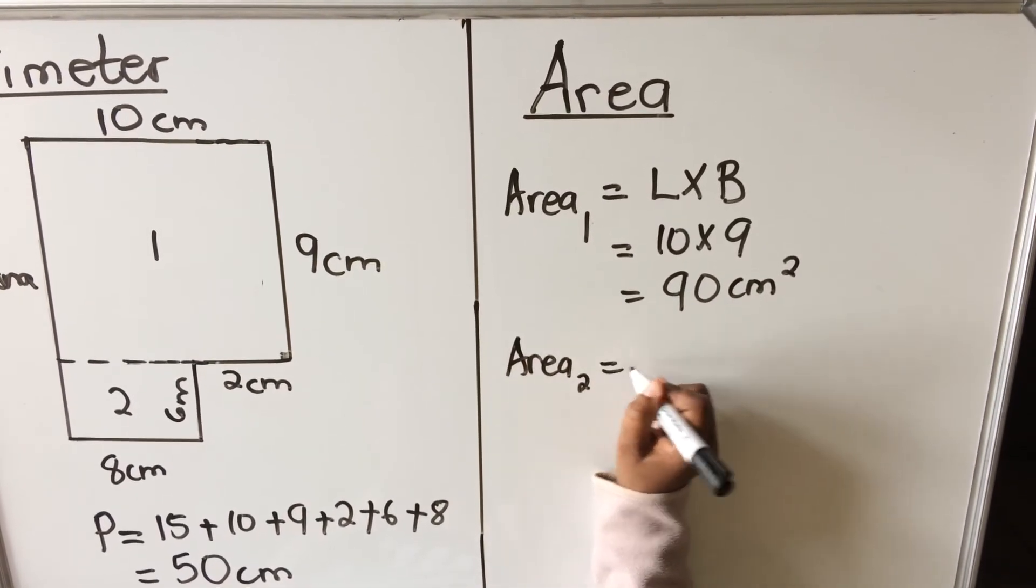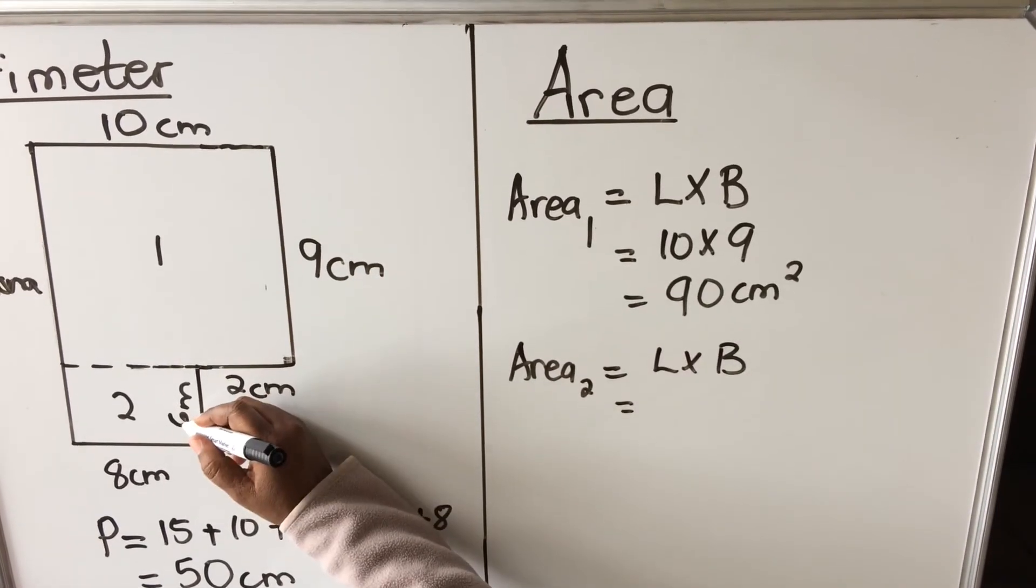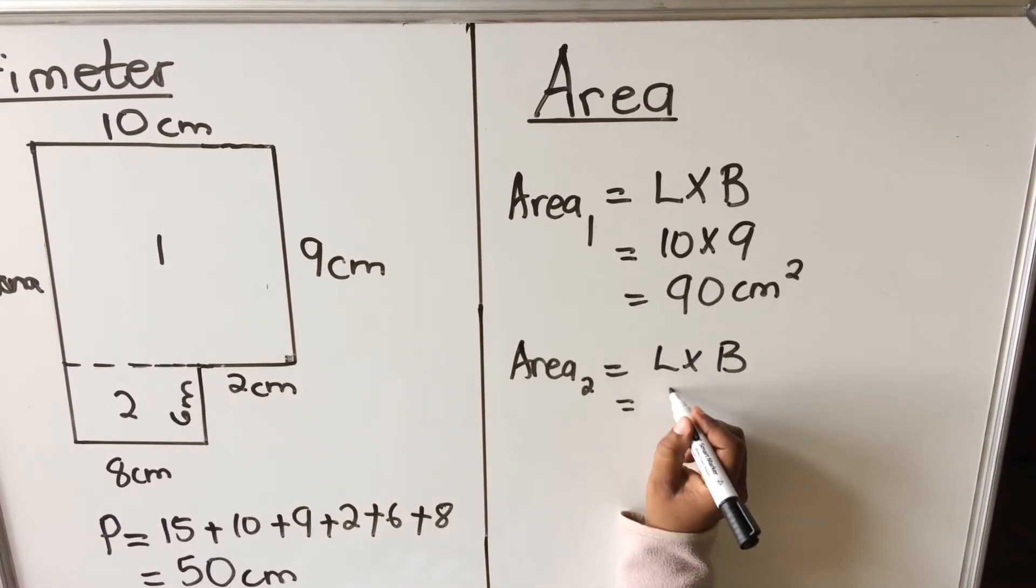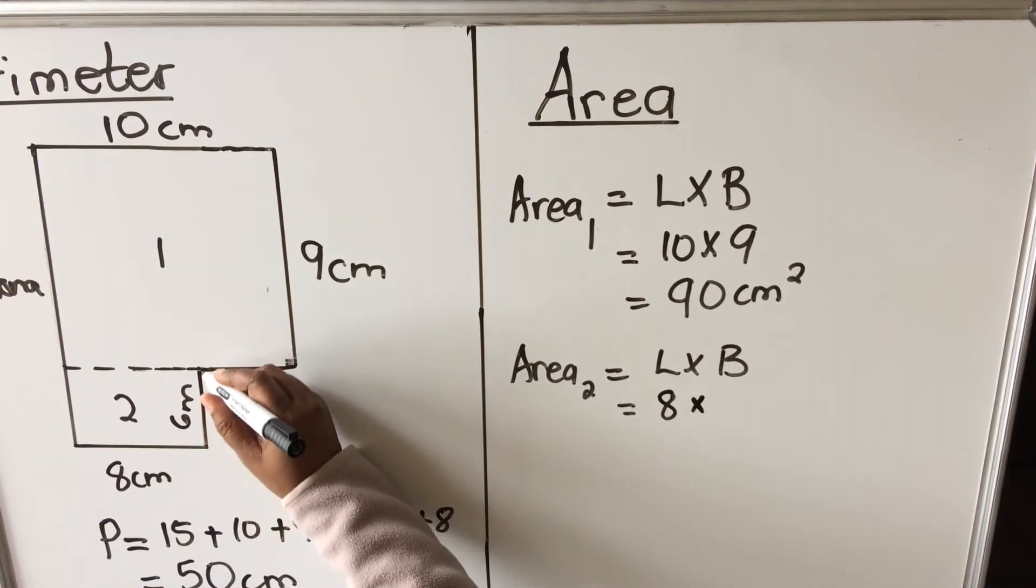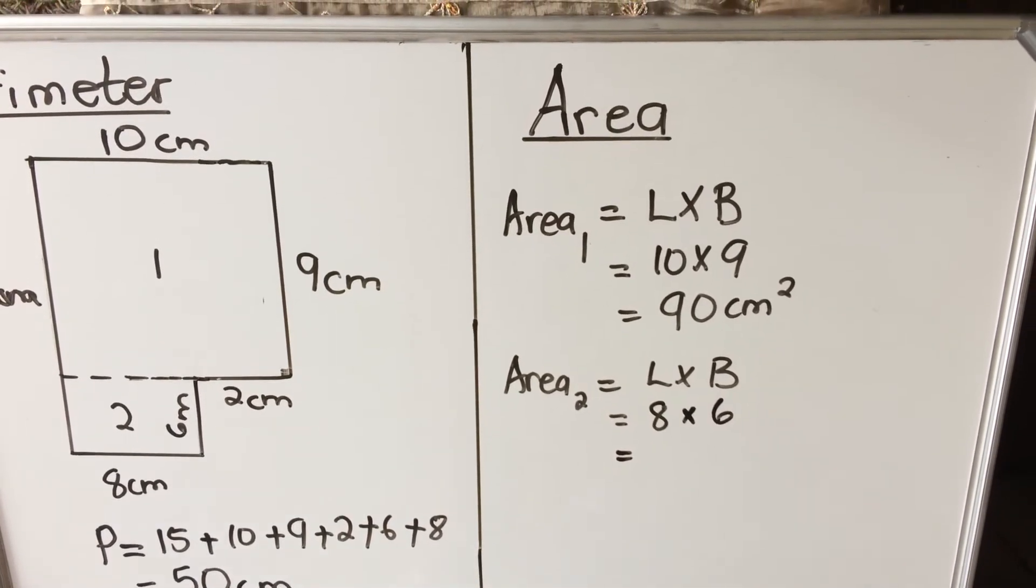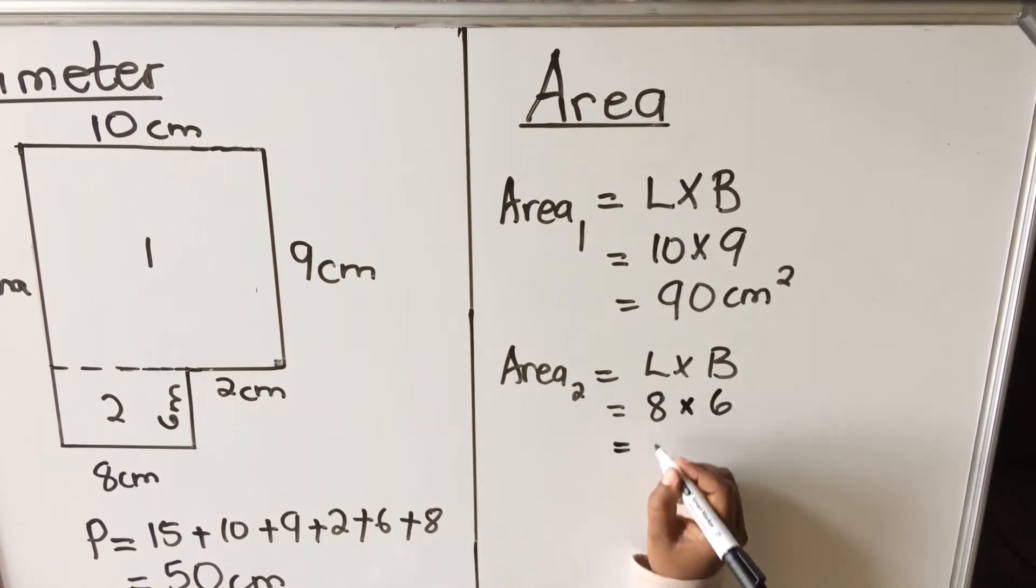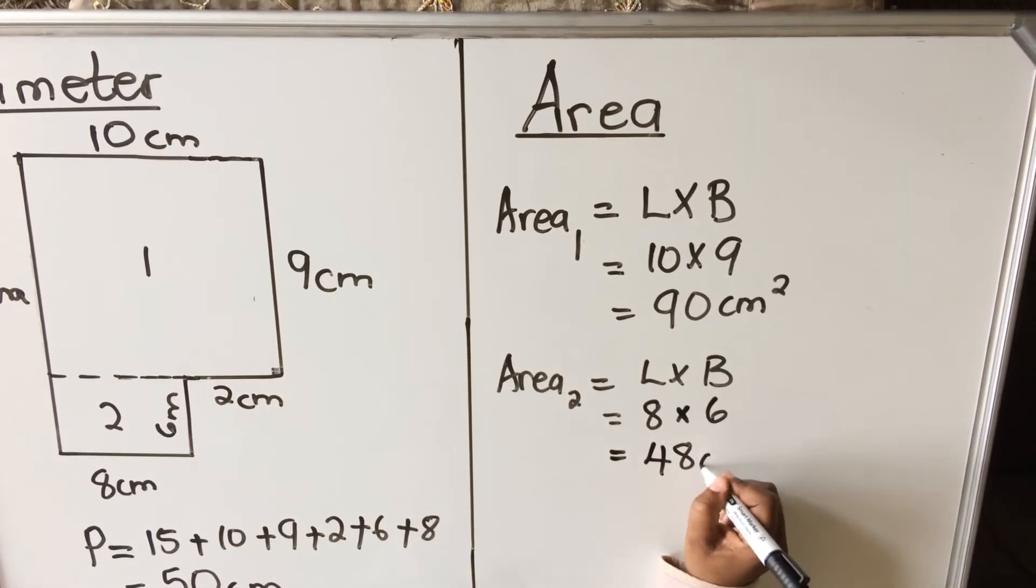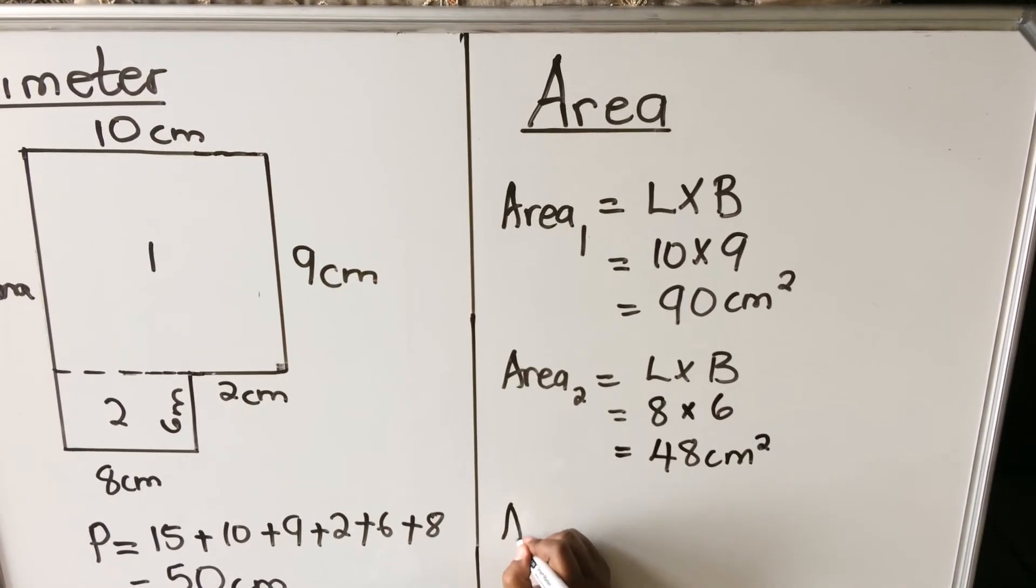Area 2, length times breadth. My length is 8, this is going to be length, and my breadth is 6, and then I have 8 times 6, which is 48 centimeters squared.